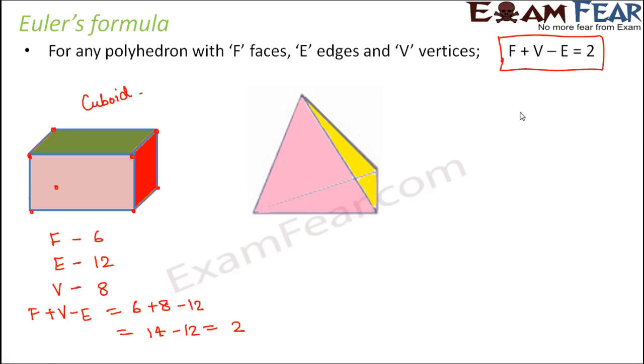Let's look at one more example. So what is this? This is a triangular pyramid. So for triangular pyramid, how many faces do we have? So we have a triangular base plus 3 triangular faces on the sides. So total 4 faces.